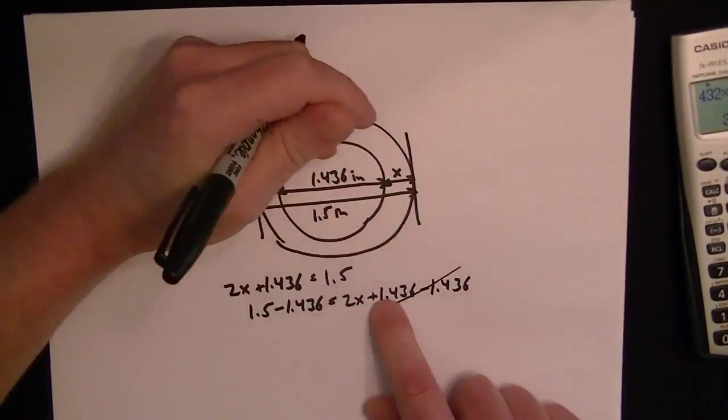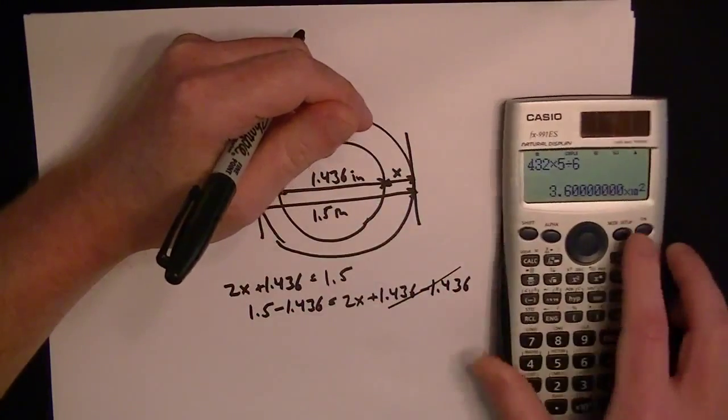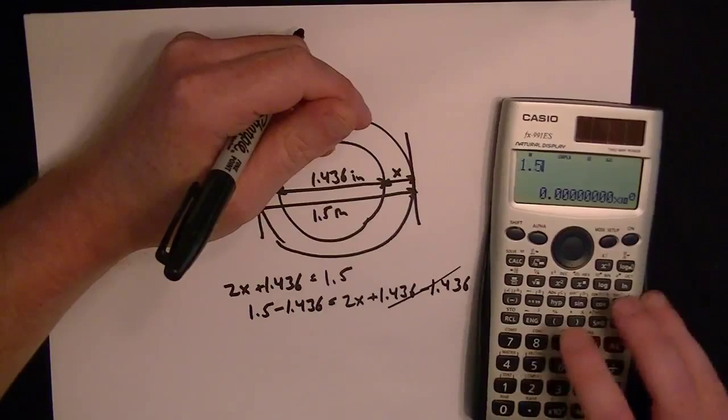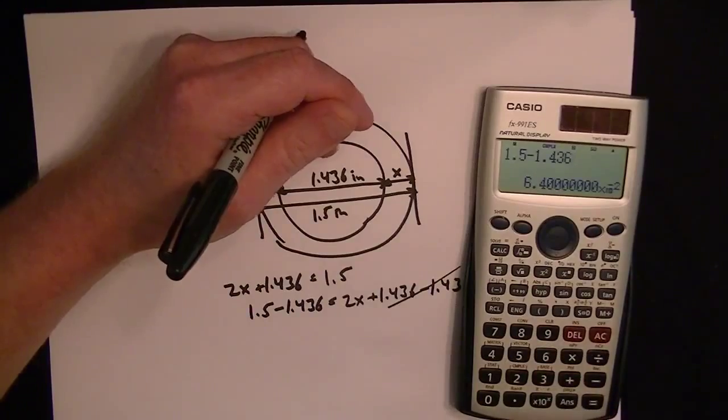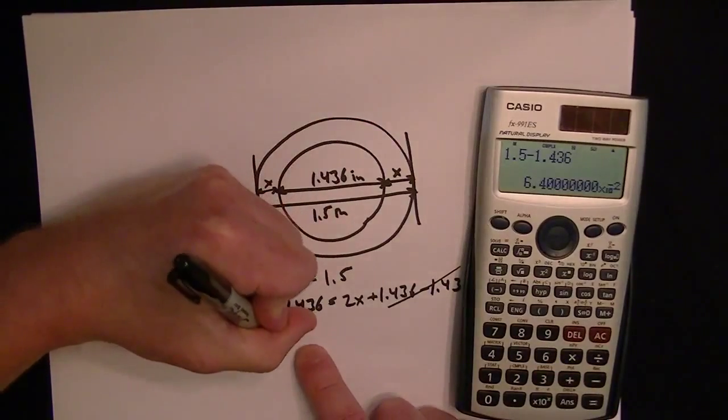All right, so those cancel because it's a positive minus a negative. So that's how we're moving it around. So 1.5 minus 1.436. That gives you 0.64.